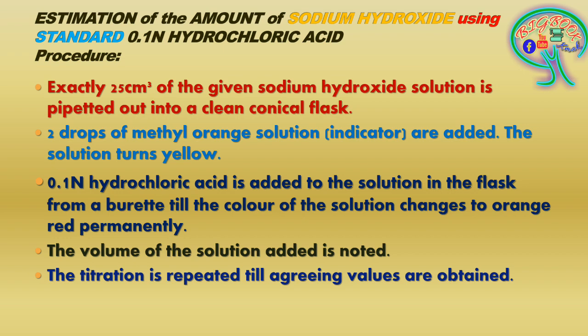The volume of the 0.1 N hydrochloric acid added is noted. The titration is repeated until agreeing values are obtained. We are going to perform this titration three times — the same procedure is repeated three times to get a very exact value.